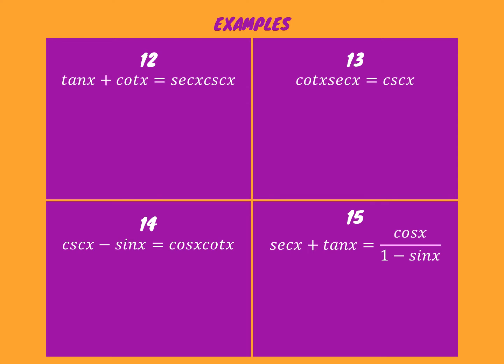So number 12 says tangent of x plus cotangent of x equals secant of x times cosecant of x. What's more complicated — a sum or a product? The sum. So I would say to start working on that side, and because the right side has secant and cosecant, I know I want to eventually get to terms of sine and cosine.